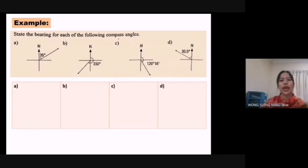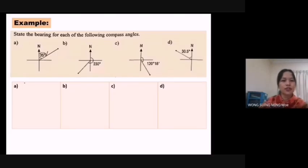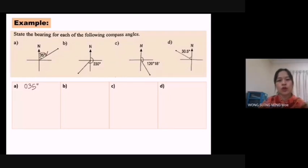Example: state the bearing for each of the following compass angles. For (a), the answer is 035° — remember we write it in three-digit form. For (b), it is also quite simple: measure the angle from north to the line, and make sure the direction is clockwise. The answer for (b) is 230°.